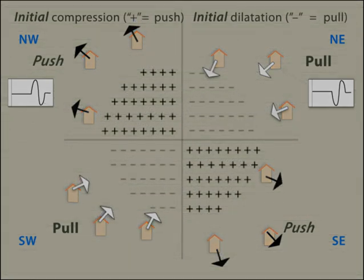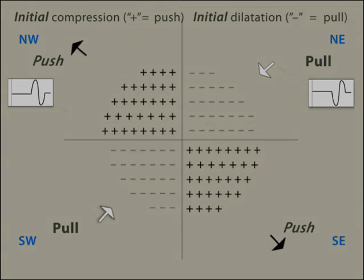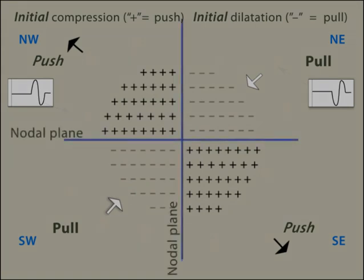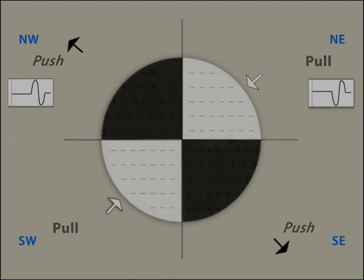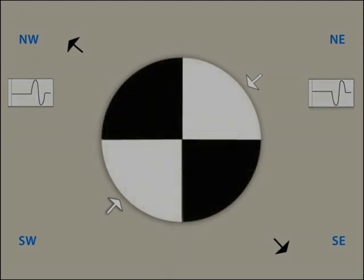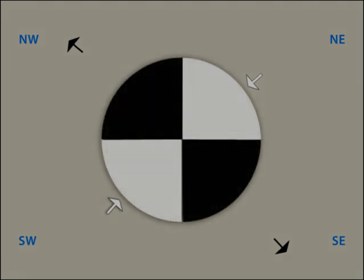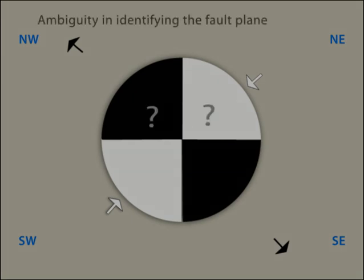With observations from many stations, we see two quadrants of compressional arrivals and two quadrants of dilatational arrivals separated by perpendicular nodal planes. To simplify the illustration, compressional quadrants can be shaded, and dilatational quadrants are left unshaded, producing a P wave first motion pattern that looks like a beach ball.